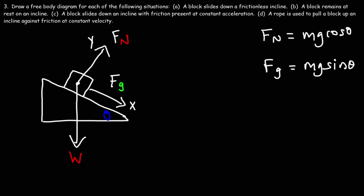For those wondering how we get these equations: draw a line parallel to the normal force to create a triangle where W is the hypotenuse. This angle theta in the incline is equivalent to the angle inside that triangle. Across theta is the opposite side, and we know that sine is opposite over hypotenuse. So let's redraw this triangle — the hypotenuse is the weight force mg, and theta is the angle.